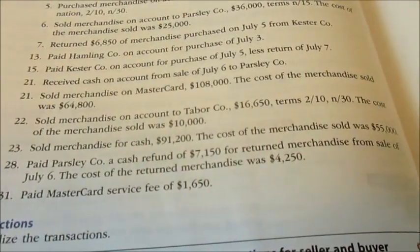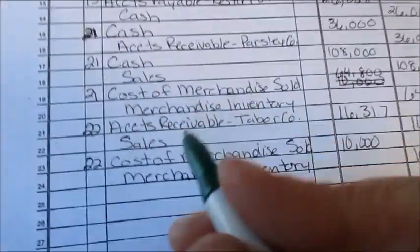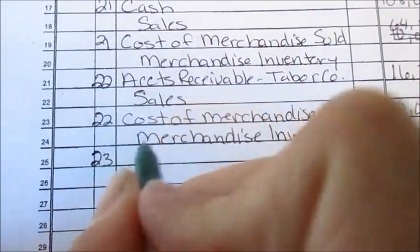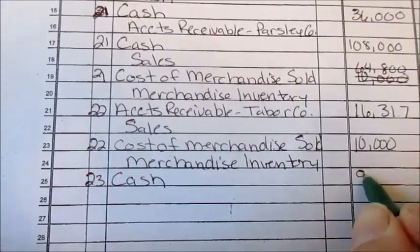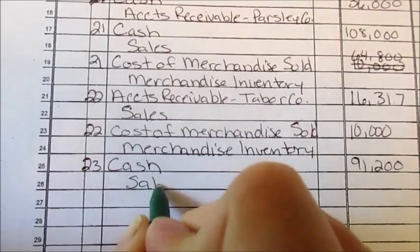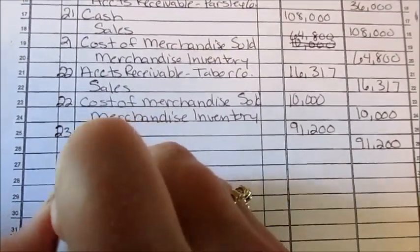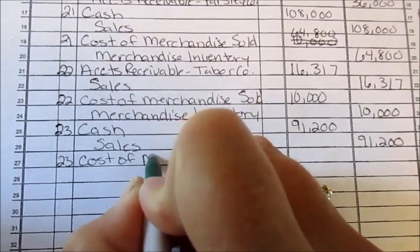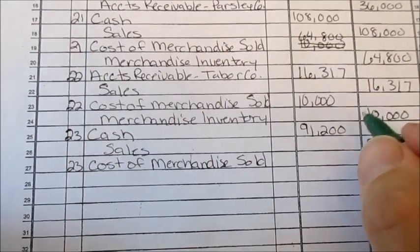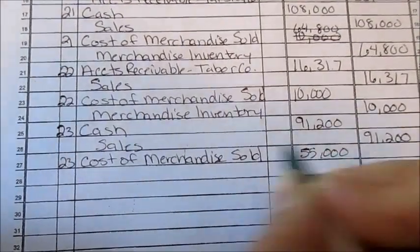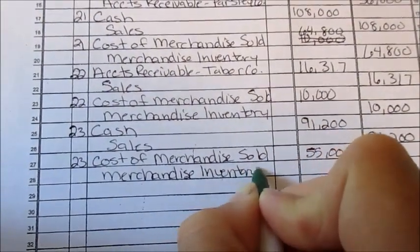On the 23rd, we sold merchandise for cash — $91,220; cost of merchandise sold was $55,000. Just like the credit card transaction: debit Cash for $91,220 and credit Sales for $91,220. And again we have to keep track of our cost of merchandise sold — debit Cost of Merchandise Sold for $55,000 and credit Merchandise Inventory for $55,000, since we sold it we no longer have it.